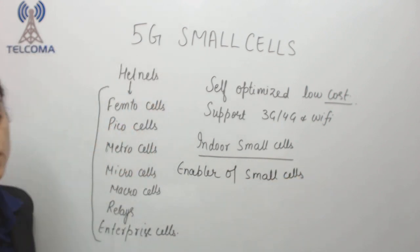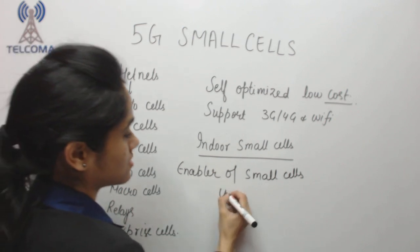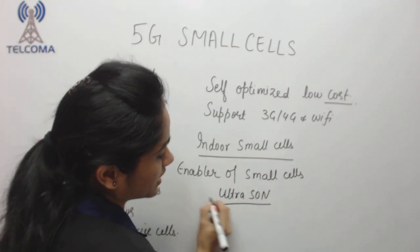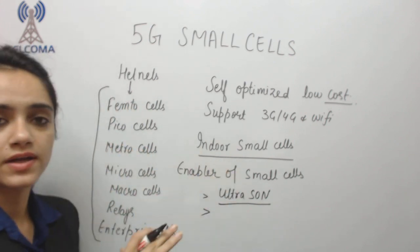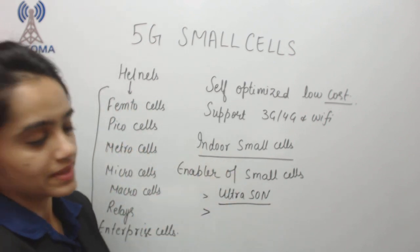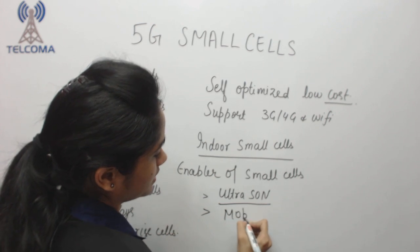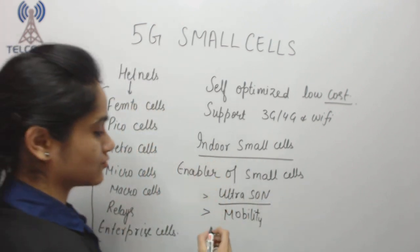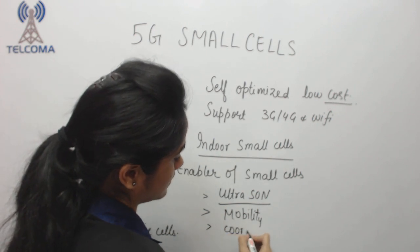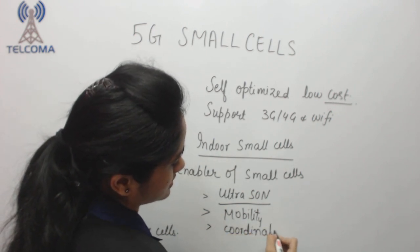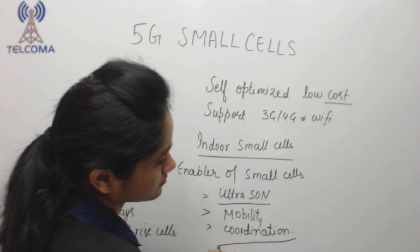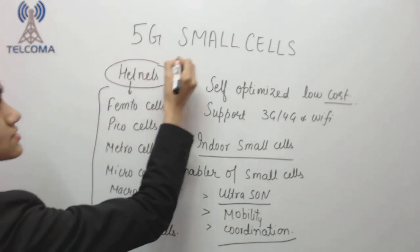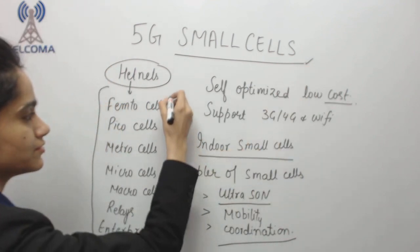The enabler of small cells is ultra self-optimized networks — they can coordinate with one another and optimize through coordination. They can support mobility, meaning handover should be faster from one small cell to another small cell. That is why we are using the concepts of heterogeneous networks and small cells in 5G.